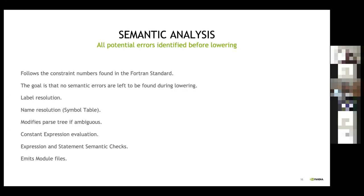Semantic analysis is focused on finding all potential errors before we get to lowering. Generally it follows the constraint numbers found in the Fortran standard. It's doing label resolution, name resolution, and scope management. The parse trees are inherently ambiguous — something that looks like a function call could be an array reference or a statement function reference — so we have to rewrite the parse tree as we gain semantic knowledge of what the names mean. We also handle expression and statement semantic checks, constant expression evaluation, and module file emission. Module files are essentially Fortran source that can be compiled and imported quickly.